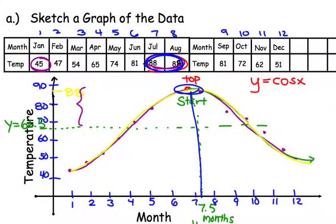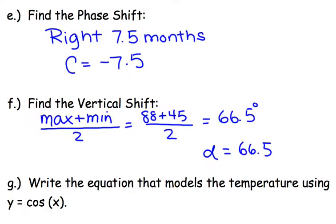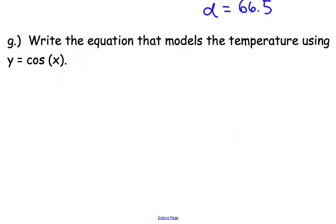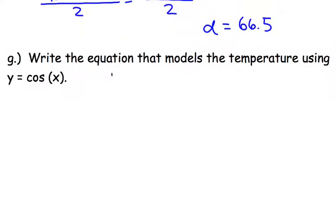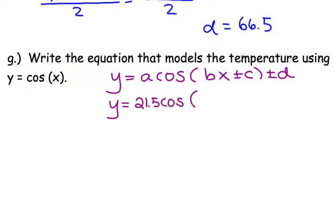Now we're going to go ahead and plug everything into our cosine function. Alright. So remember our cosine function. We found all of our pieces now, right? So what was our A value, our amplitude? 21.5. No reflection since we started at the top of the amp. Our B value was pi over 6, and then we moved right 7.5 months, and then we moved up 66.5 degrees. And that is our trig function for this graph.